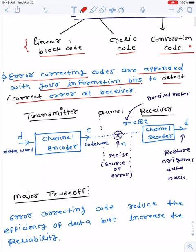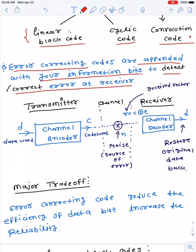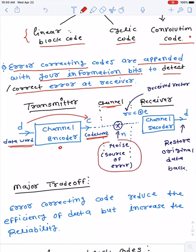This block diagram shows how the received bit is encountered with an error. There is a channel encoder — the place where encoding of your information bit is done. The input is your data word; after passing through the channel encoder it is converted to a code word. A code word consists of the error correcting code plus the information bits, and they are transmitted through the channel where noise is added.